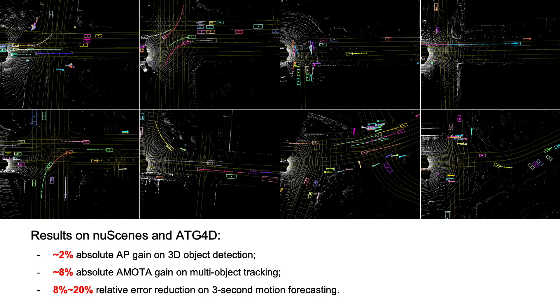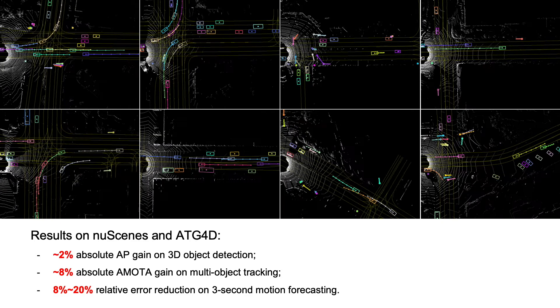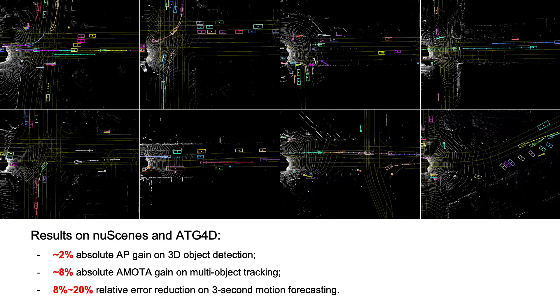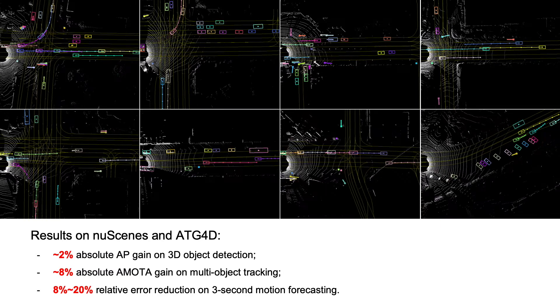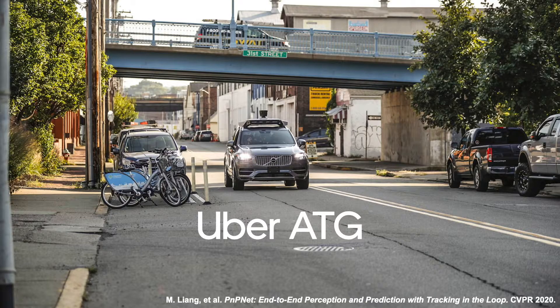Here we show the perception and prediction results of our model on vehicles and pedestrians within 100 meters. We achieve a 2% gain on detection, 80% gain on tracking, and up to 20% improvements for motion forecasting. Thank you.